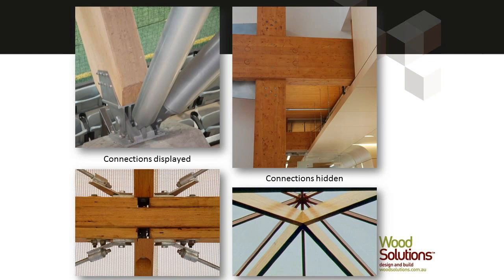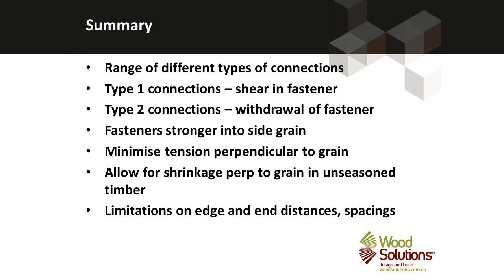In summary, a range of different types of connections can all be categorised as either shear in the fastener — type 1 connections — or tension in the fastener — type 2 connections. Fasteners are stronger into the side grain. We detail connections to minimise tension perpendicular to the grain, and part of that is using appropriate spacings, end distances, and edge distances.